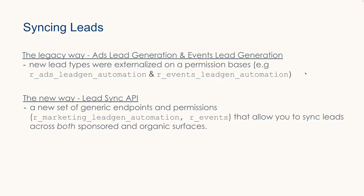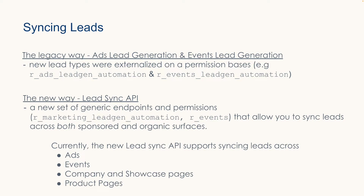What they're being replaced with is the new LeadSync API — a new set of generic API endpoints and permissions that allow you to sync leads across both organic and sponsored services via two new permissions: r_marketing_leadgen_automation and r_events. The new LeadSync API supports syncing leads across ads, LinkedIn events, company and showcase pages, as well as product pages. All existing developers must migrate to the new LeadSync API endpoints prior to July 2024. This will require adding these two new scopes to your OAuth flow, which means all of your customers will need to reauthenticate, so we strongly suggest migrating as soon as possible.